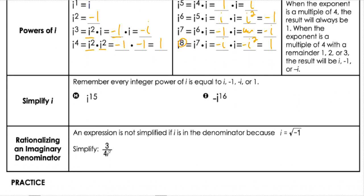Let's practice simplifying with powers of i. For i to the 15th, I'm looking at how many multiples of 4 I can take out. So I'm going to go i to the 12th, because that's a multiple of 4, with a leftover of i to the third. So i to the 12th, because it's a multiple of 4, is always 1, and then times i to the third.